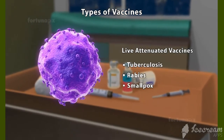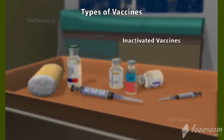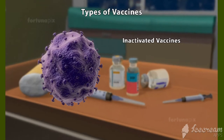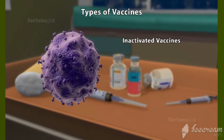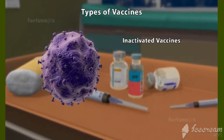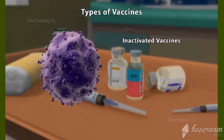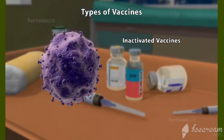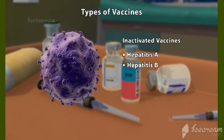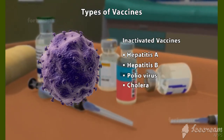Inactivated vaccines: Dead pieces of disease-causing microorganisms, usually bacteria, comprise inactivated vaccines. Examples of inactivated vaccines include Hepatitis A, Hepatitis B, Poliovirus, Cholera, and Typhoid.